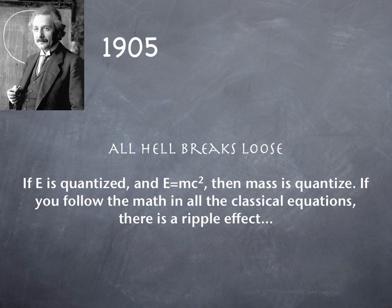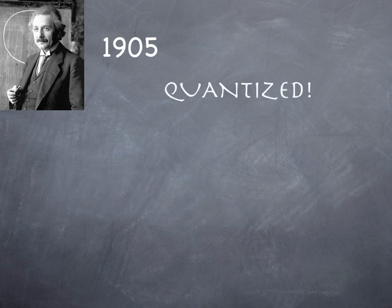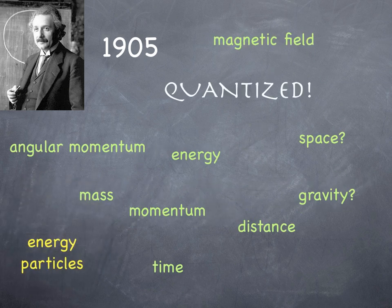All hell is about to break loose, because if E is quantized and E equals MC squared, then mass is quantized. If you follow the math and all the classical equations, there's a ripple effect — all kinds of things become quantized. Just because the amount of energy is quantized, does it really mean you're going to have discrete energy in a particle? It actually does end up meaning that.